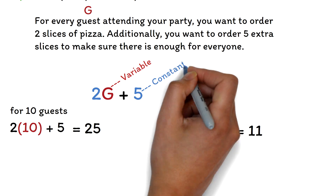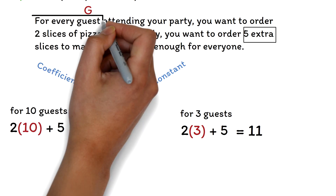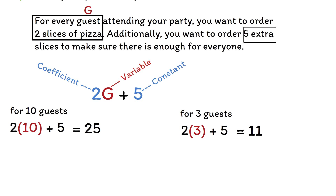The 5 is the constant — you are buying 5 extra slices no matter what the situation. This value doesn't change. Even if there are 100 guests, you are still buying only 5 extra pizzas. The 2 is known as the coefficient. This is simply the number in front of the variable, and it usually represents the value per unit — in this case, the number of pizza slices you want to buy for one guest. As you proceed through your algebra course, you will meet scenarios where letters instead of numbers are used as constants and coefficients. We will look at them later.